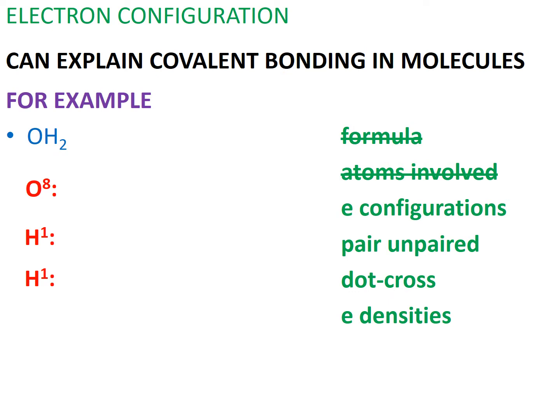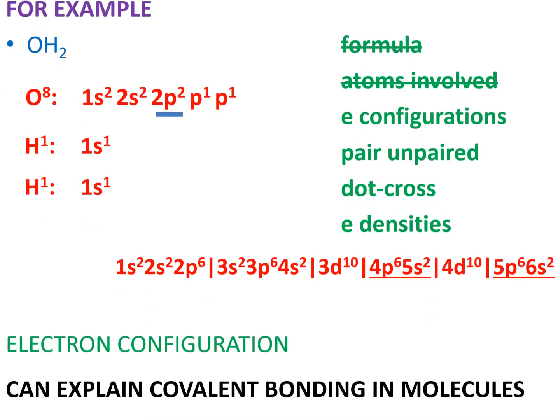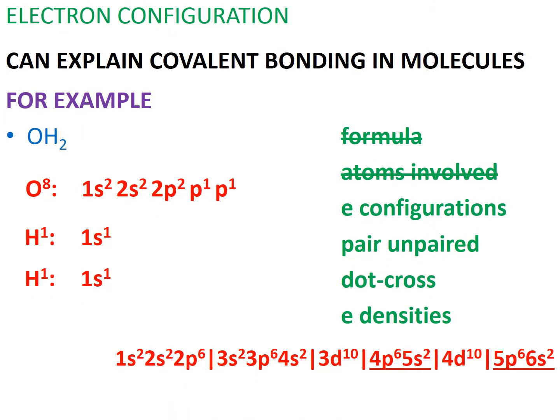Before we write out their electron configurations, we need to know how many electrons each of these elements contain. Oxygen has eight electrons: two will occupy the sole 1s orbital, another two will occupy the sole 2s orbital. Then, using Hund's rule, three of oxygen's electrons singly occupy the three orbitals of 2p, with the last electron pairing up with the single electron in the 2p1 orbital. In the case of hydrogen, these two atoms each have one electron occupying the sole 1s orbital.